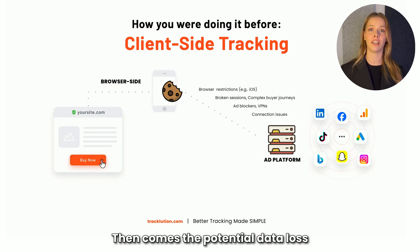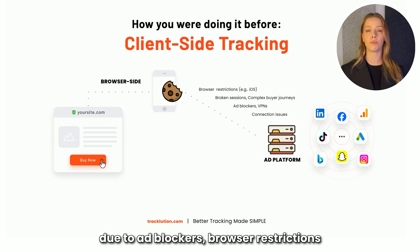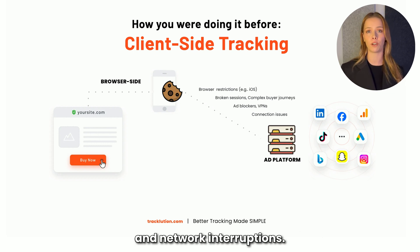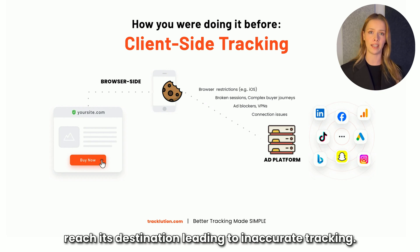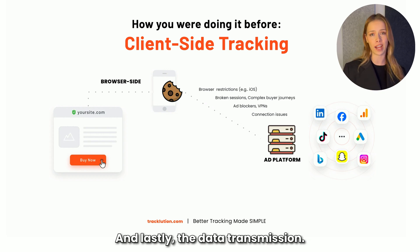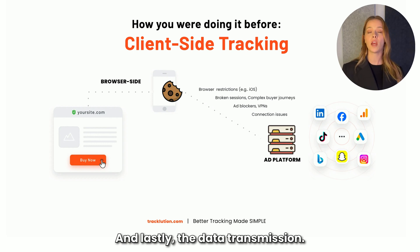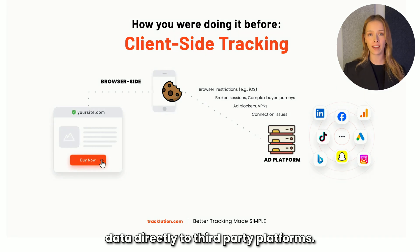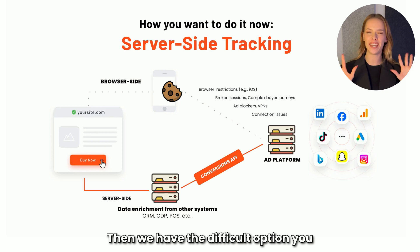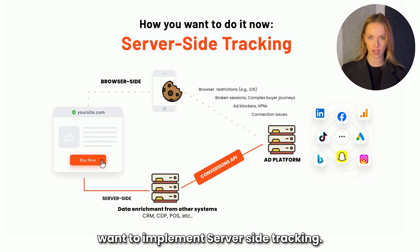Then comes the potential data loss. Due to ad blockers, browser restrictions, and network interruptions, some of this data might not reach its destination, leading to inaccurate tracking. And lastly, the data transmission: the browser Pixel sends this inadequate data directly to third-party platforms. Then we have the difficult option you want to implement — server-side tracking.